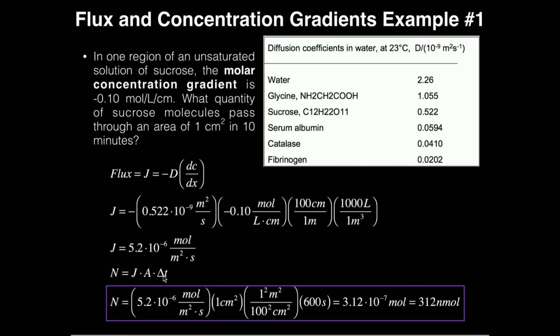So I'm going to apply this formula. N is J, which we just found, 5.2 times 10 to the minus six moles per square meter per second. The area is given to me. It is one square centimeter. Skip this for one second. We'll come back to that what that is. And the time interval is 10 minutes.